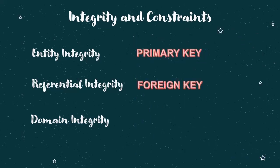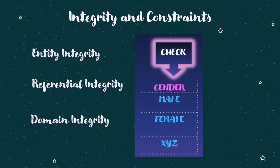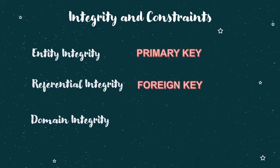We can also restrict a column to only specific allowed values. For example, suppose a column is 'gender'. We can only accept two values: male and female. If a user tries to enter X, Y, or Z, it should not be inserted — the system should return an error saying only male or female can be entered. This is called Domain Integrity, and it is enforced using a Check Constraint. Domain Integrity ensures both the correct data type and valid values through Check Constraint.